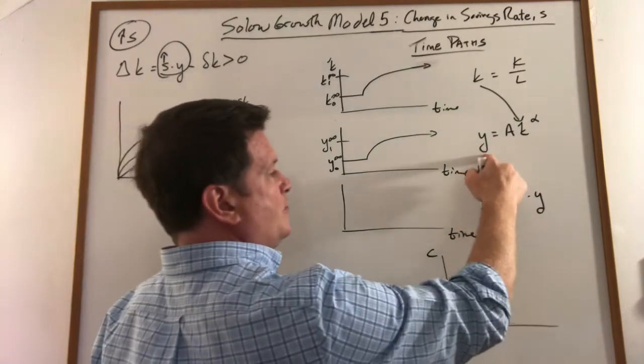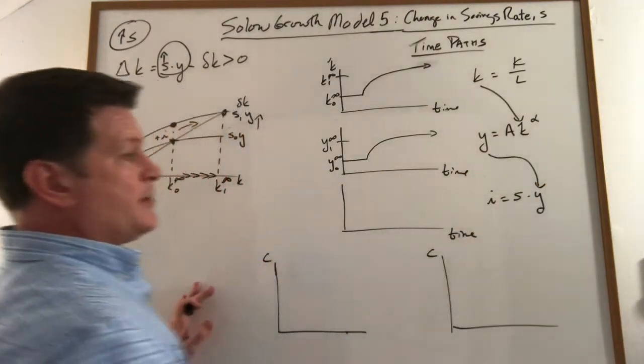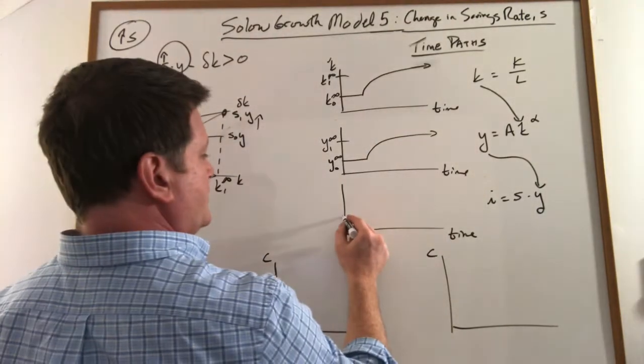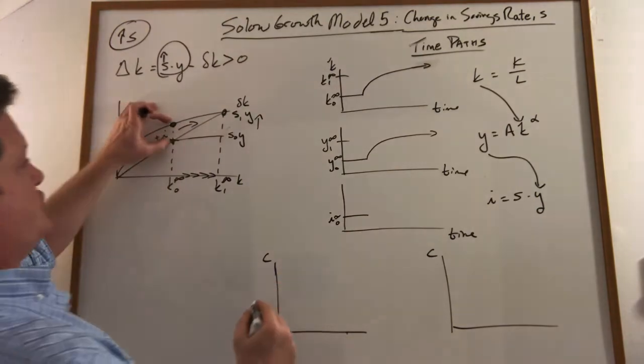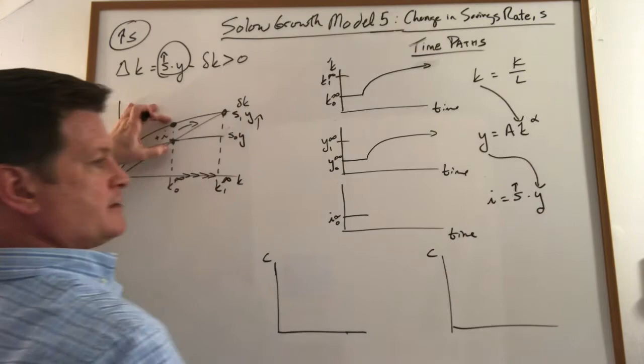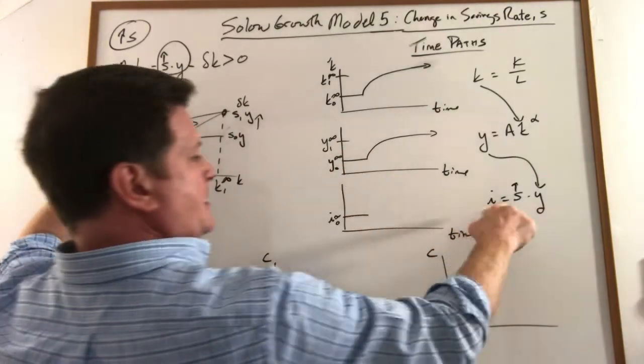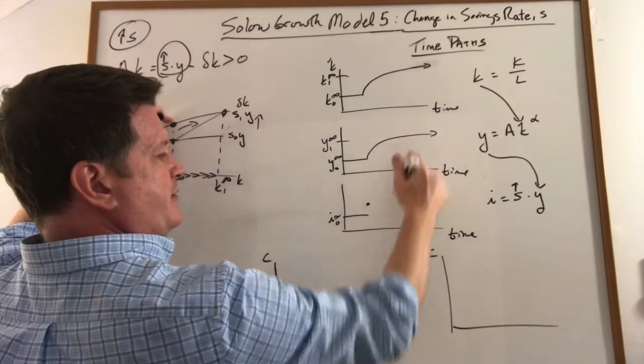Investment. We know what GDP does or production does, but don't forget it started with a jump in investment because this suddenly increased. It increased once like this and then it followed the path of GDP.